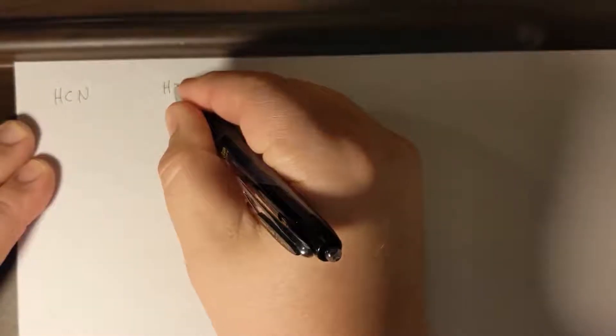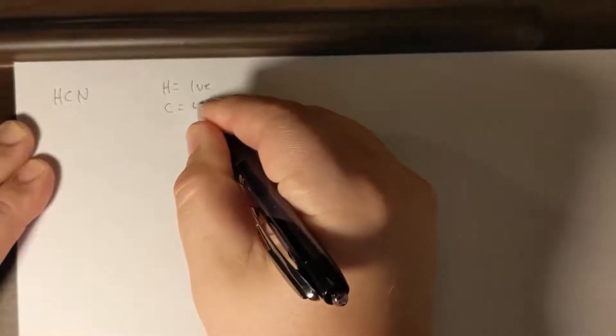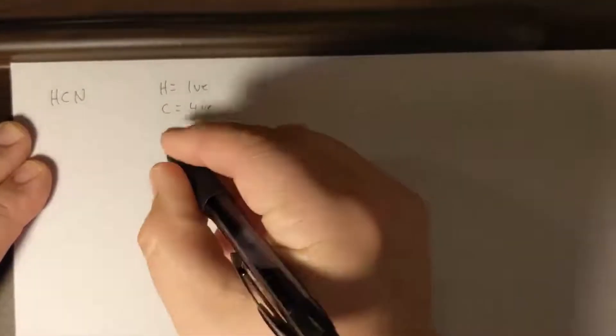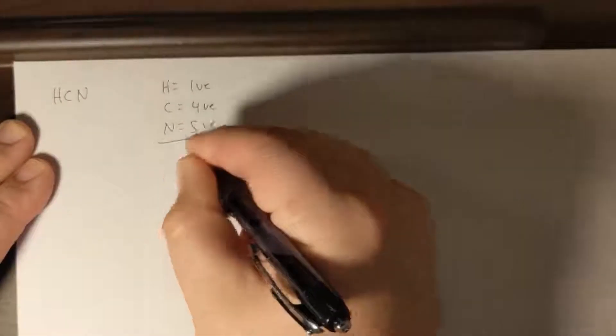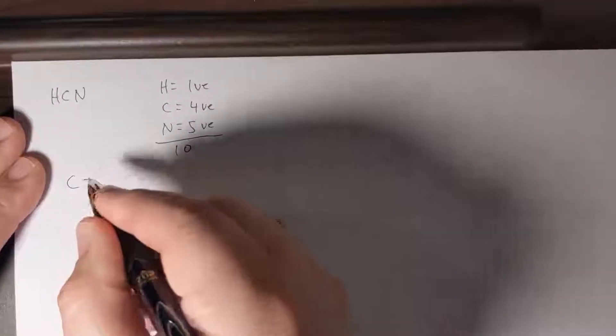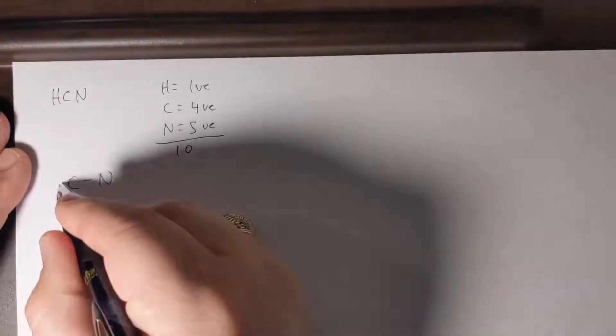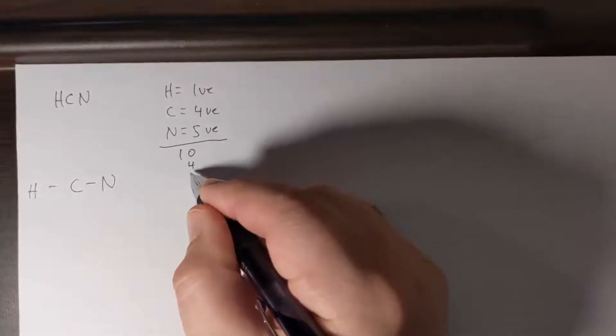So we'll start out with our formula HCN. H has one valence electron, carbon has four valence electrons, and nitrogen has five valence electrons for a total of ten. And we'll put carbon at the center of our structure.